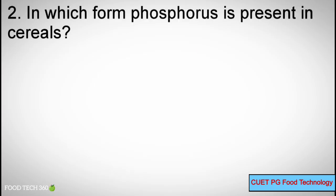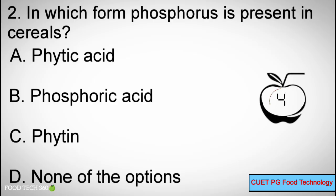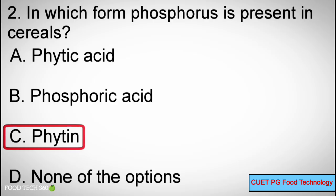Q2: In which form is phosphorus present in cereals? A. Phytic Acid, B. Phosphoric Acid, C. Phytin, D. None of the options. Correct answer: C. Phytin.